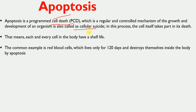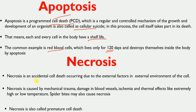In cellular suicide, the cell itself takes part in its own death. Every cell in our body has a shelf life — the lifetime of every cell is limited. For example, red blood cells (RBCs) in our blood only live for 120 days. After 120 days, red blood cells are programmed to die, which is called programmed cell death, or apoptosis.